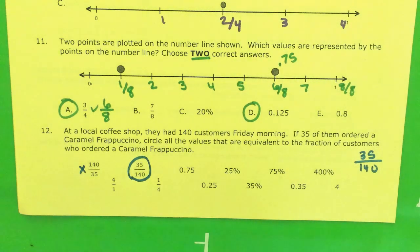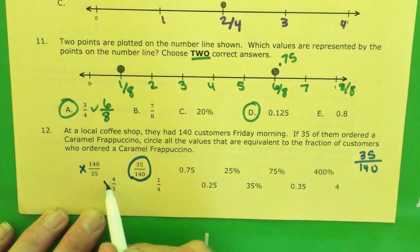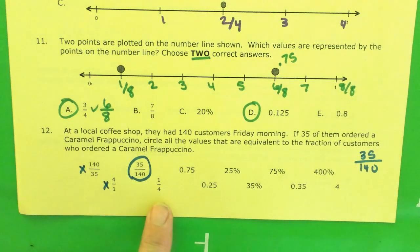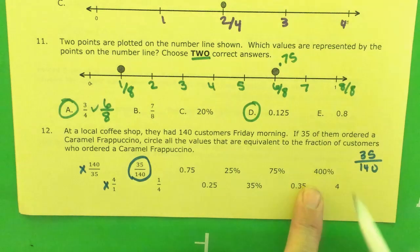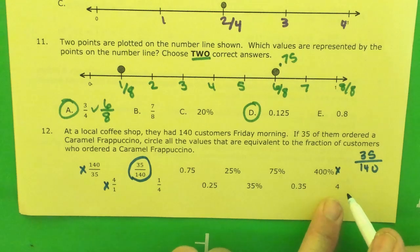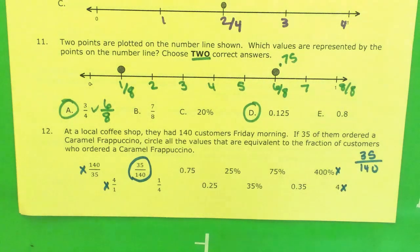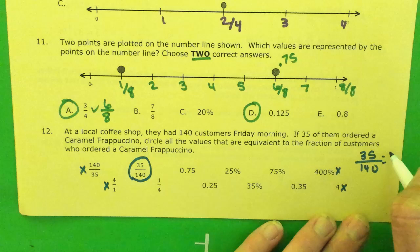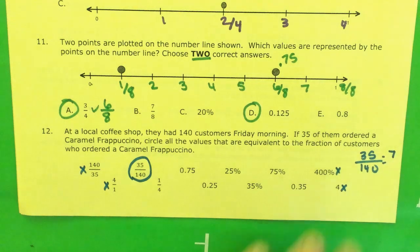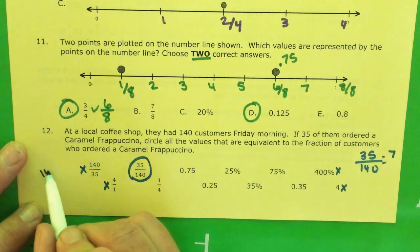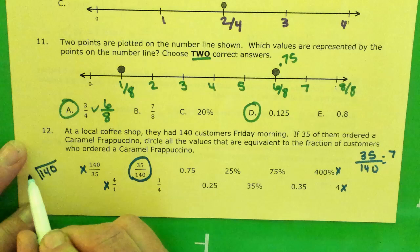The top has to be smaller than the bottom. I don't know about the one fourth. I don't know any of these. 75 seems big. 400 percent. That's ridiculous. And four holes. That's ridiculous. So let's reduce this down. I know 35 can be divided by 5. And that gives me 7.